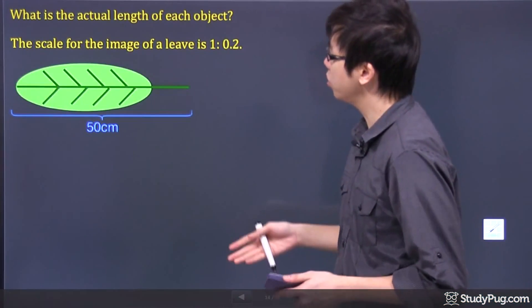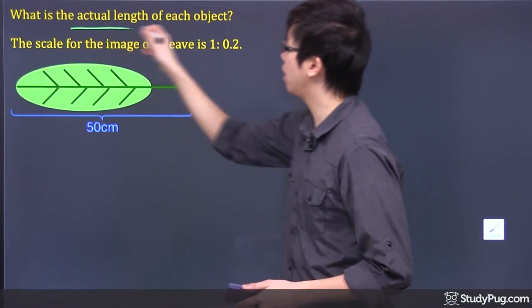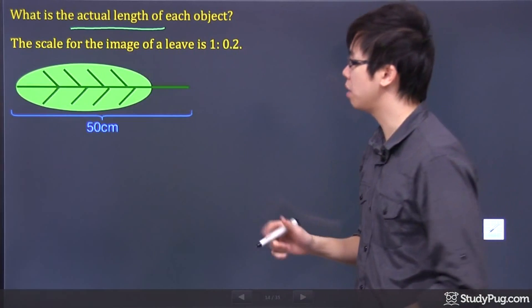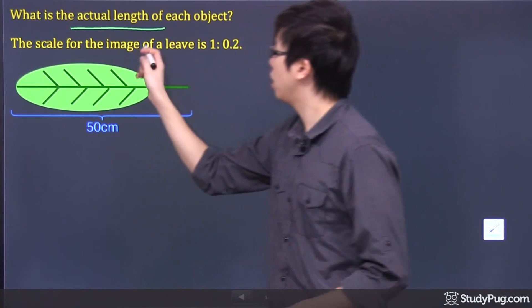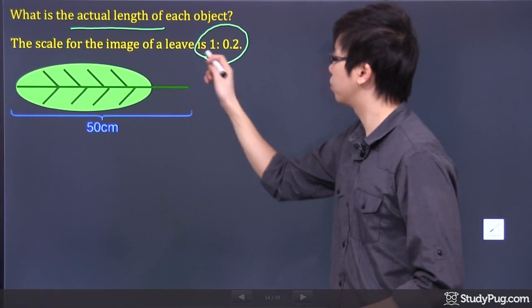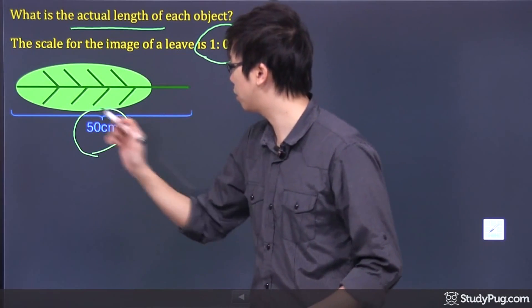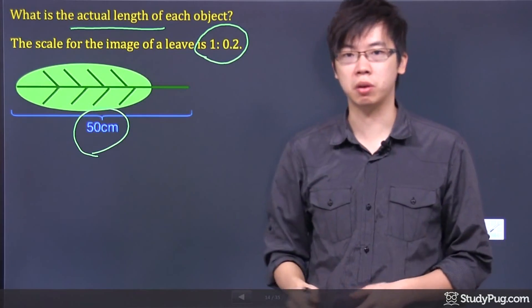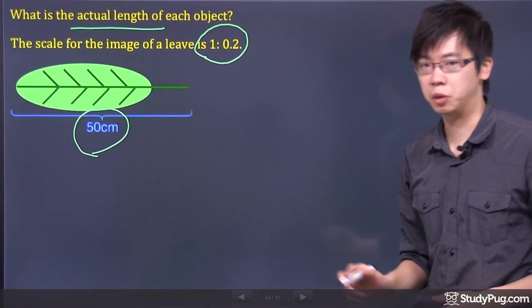Hi, welcome to this question right here. We're trying to figure out the actual length of the objects. And there's a scale of the image to the leaf is 1 to 0.2, and here's the length of the image at 50 centimeters. Now, there's something that we have to know.